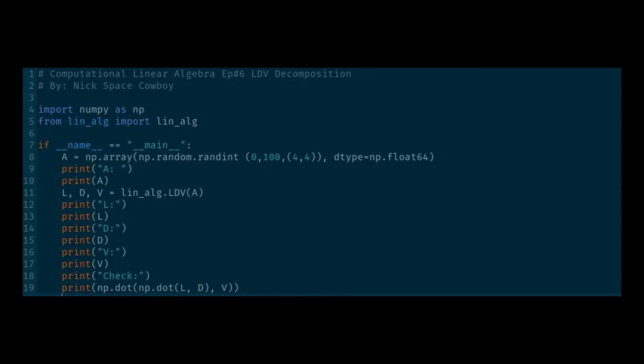Here in our LDV.py file, you can see we're doing the same general setup as before. We're generating a random 4x4 A matrix. Remember, we're still only considering square matrices. I'll let you know when we move to non-square matrices. You can see here in line 11, we are doing the LDV matrix decomposition. And then, in line 19, we are performing a check.